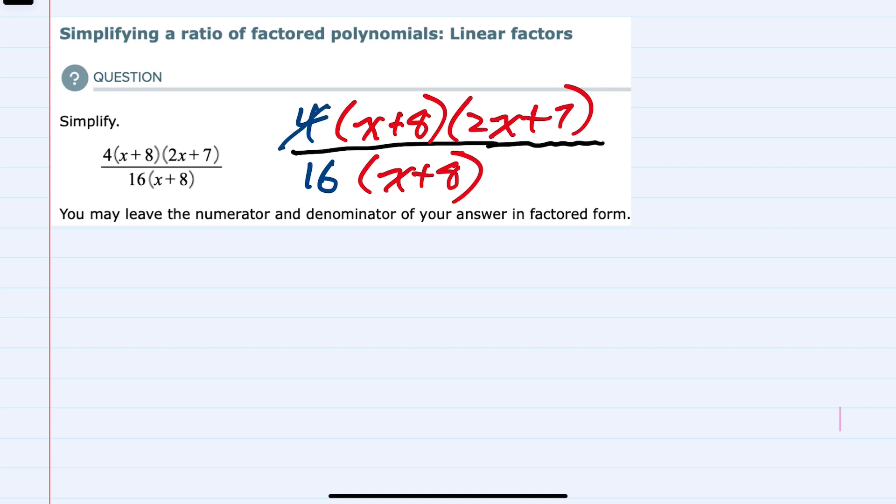We could say that 4 divided by 4 is 1, and 16 divided by 4 is 4. The reason this works is because 4 over 16 could be written as 4 times 1 over 4 times 4.